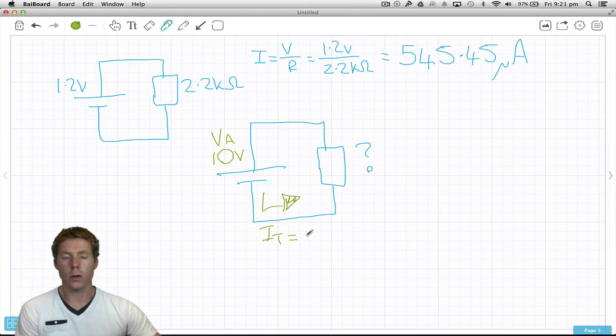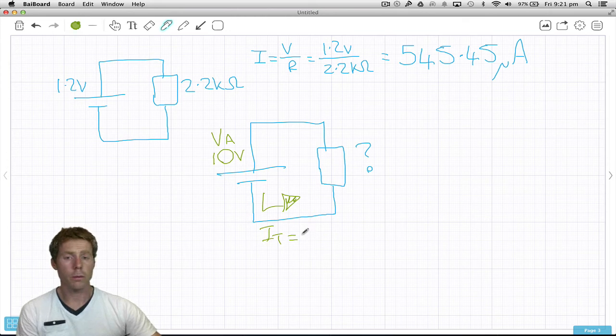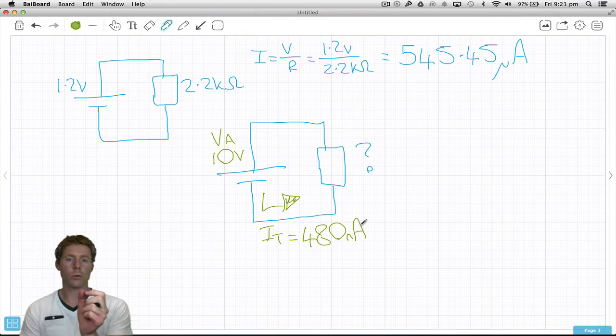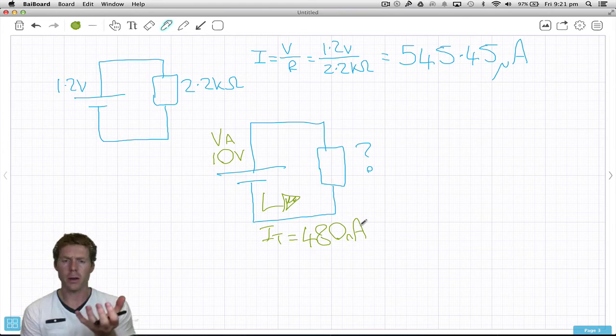Let's say IT is 480 nano amps, very very small amount of current. Therefore this resistance must be really really big. But how do we get resistance?